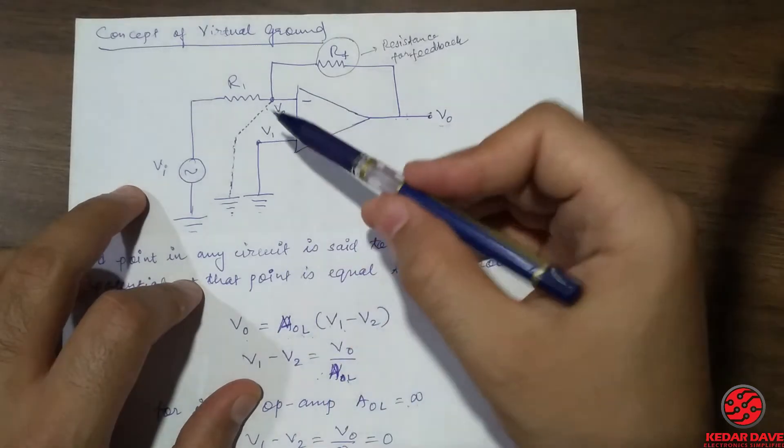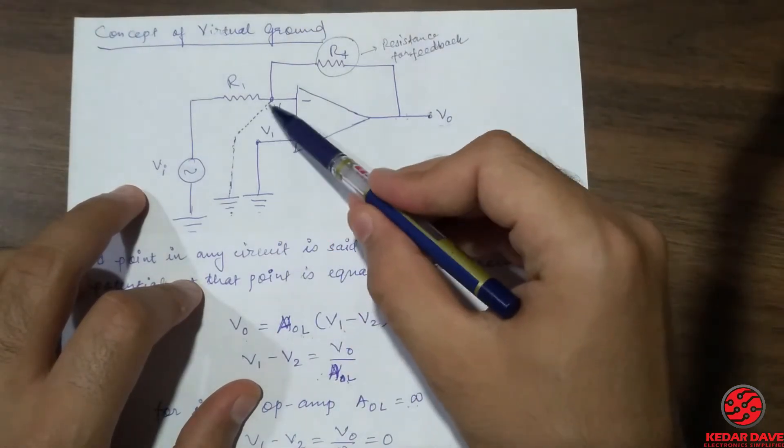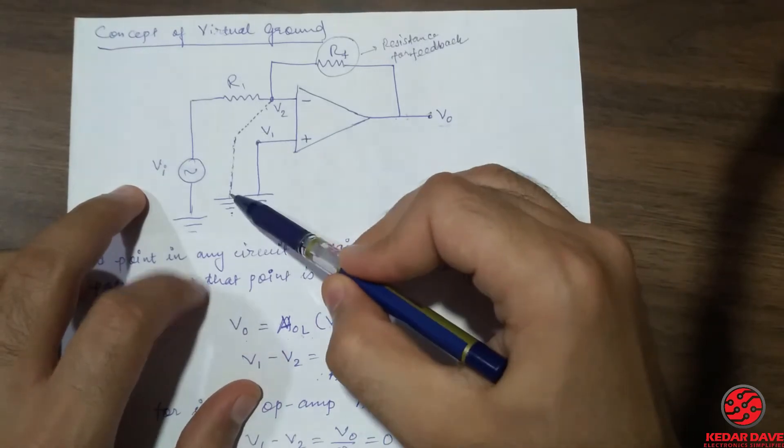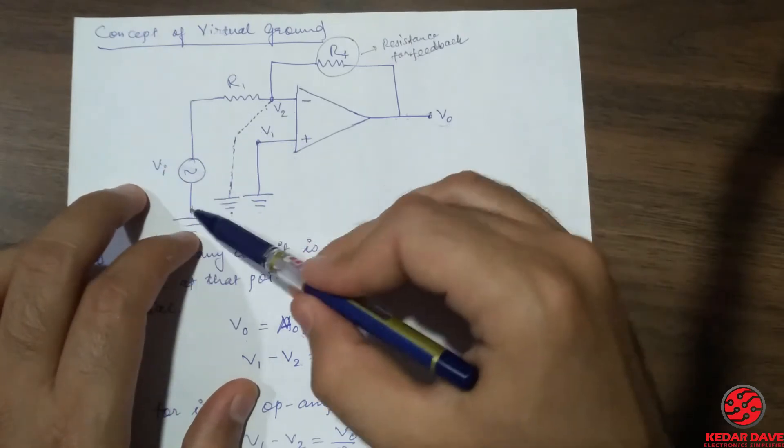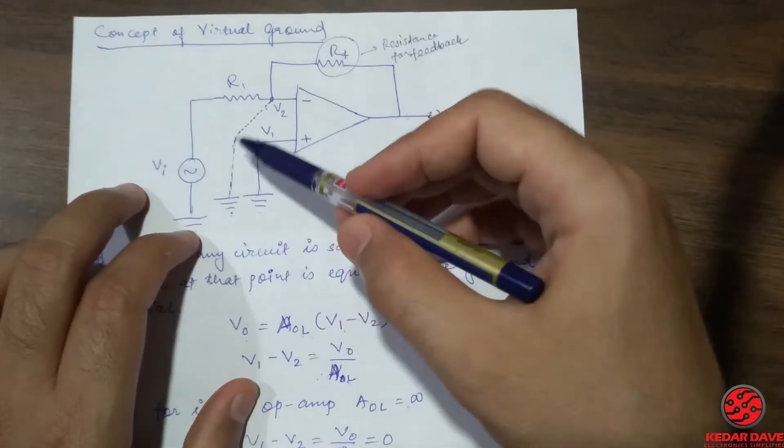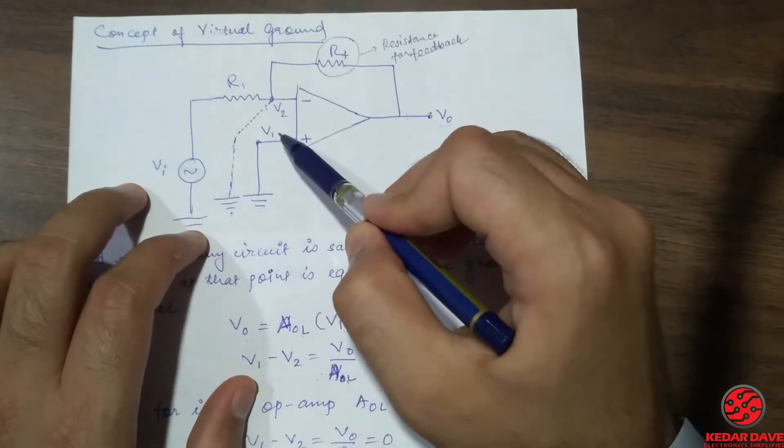Now what we need to learn is that V2 is also in the grounded position that we are going to learn about. But physically if you check then it will not be shown that it is grounded. So that is the concept of virtual ground.